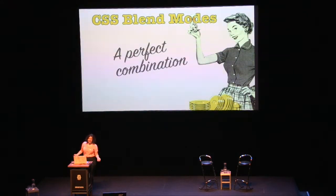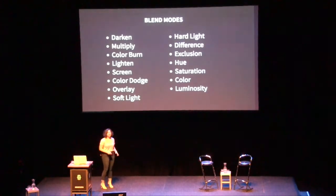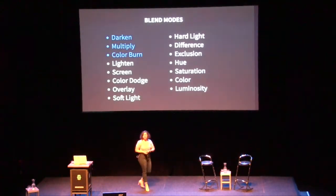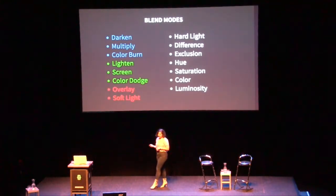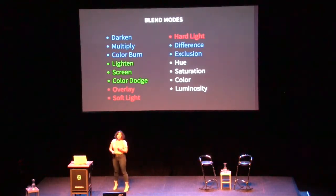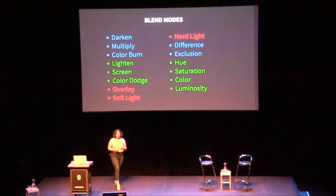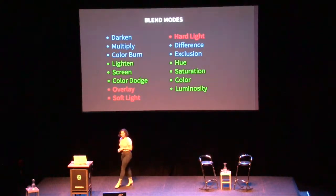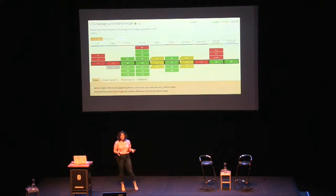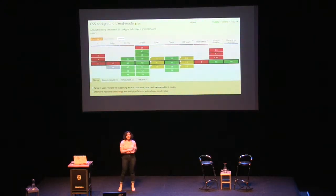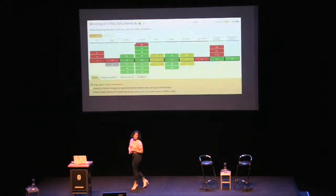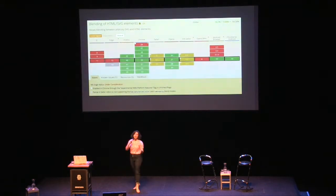There are so many more options for CSS blend modes. The options come in different groups. The first group is the darken group: darken, multiply, and color burn. Then there's lighten, screen, and color dodge. Overlay, soft light, and hard light are their own group. Then difference and exclusion. And the last four — hue, saturation, color, and luminosity — come together. Background blend mode has slightly worse coverage than CSS filters, but there are two ways to use them: background-blend-mode, which applies to elements with multiple backgrounds, and mix-blend-mode, which applies the blend mode to the element itself and mixes it with the surrounding page and elements.